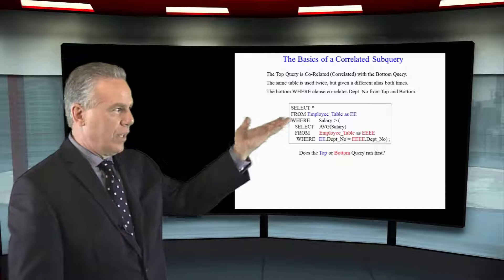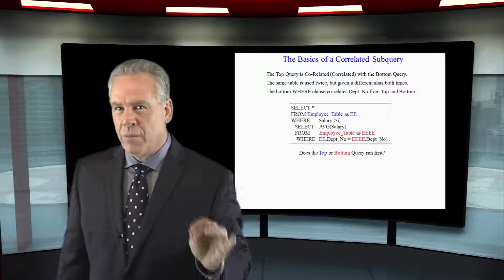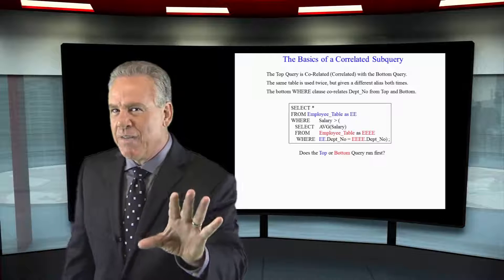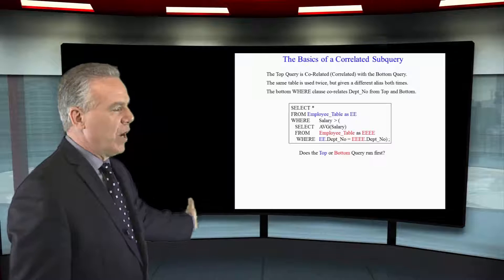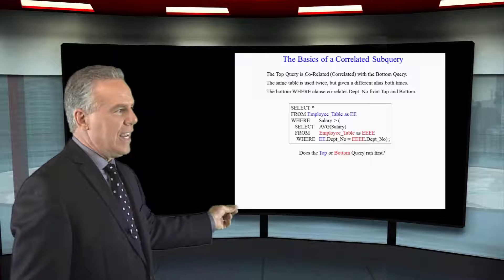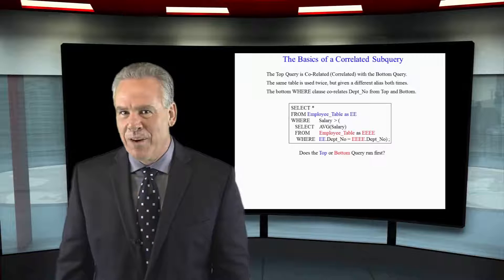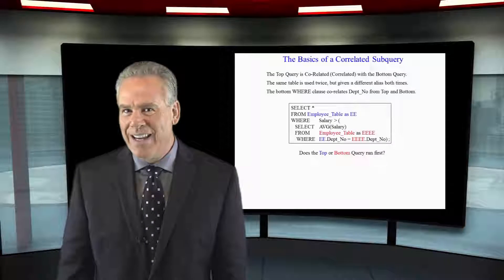It'll have a query at the top and a query at the bottom. It'll be the same table name, but it'll be aliased totally different. And at the very bottom of the bottom query, it's going to say where ee.column number is equal to ee.column number, and that is co-related.